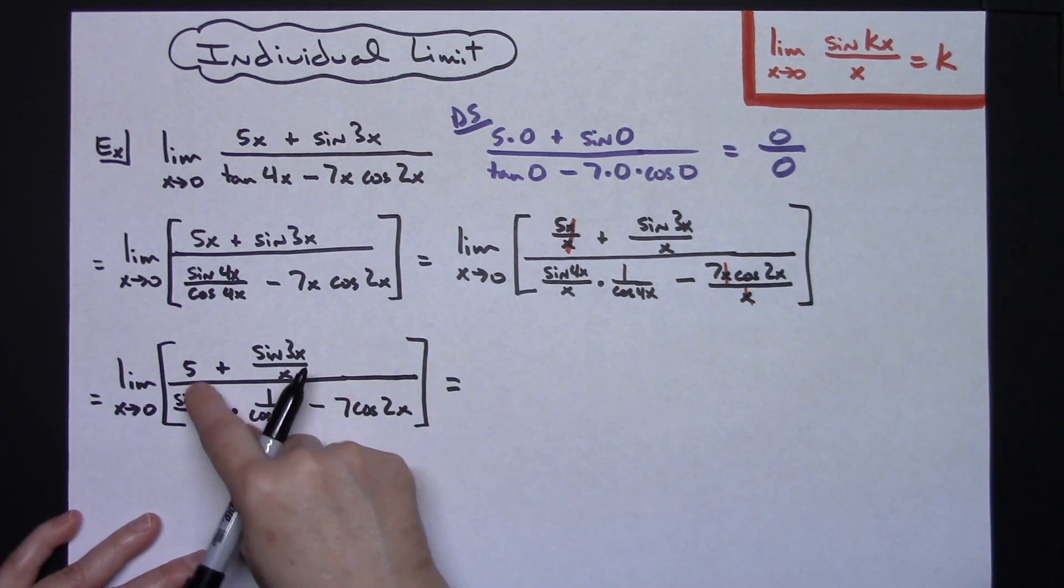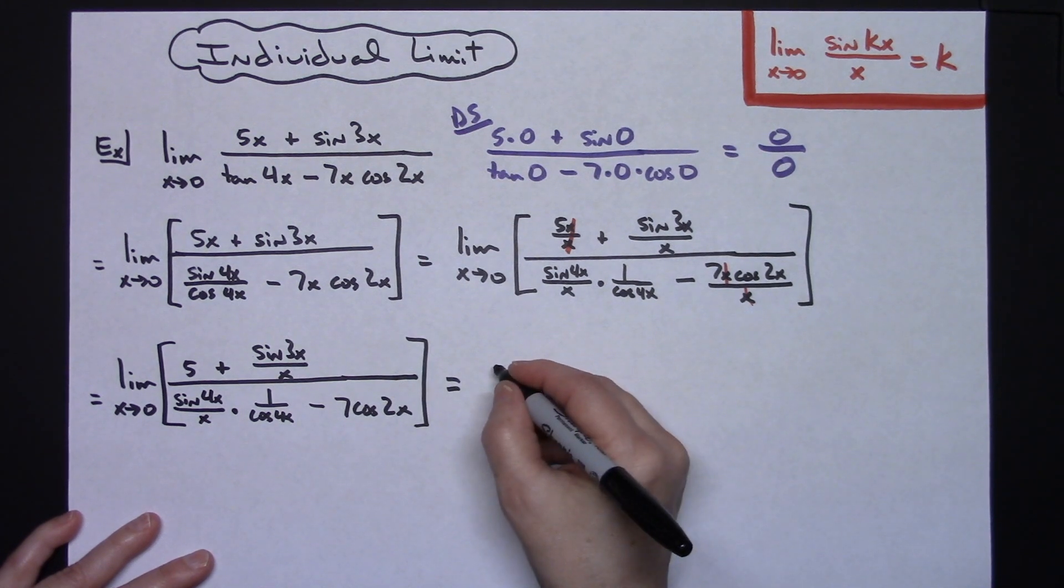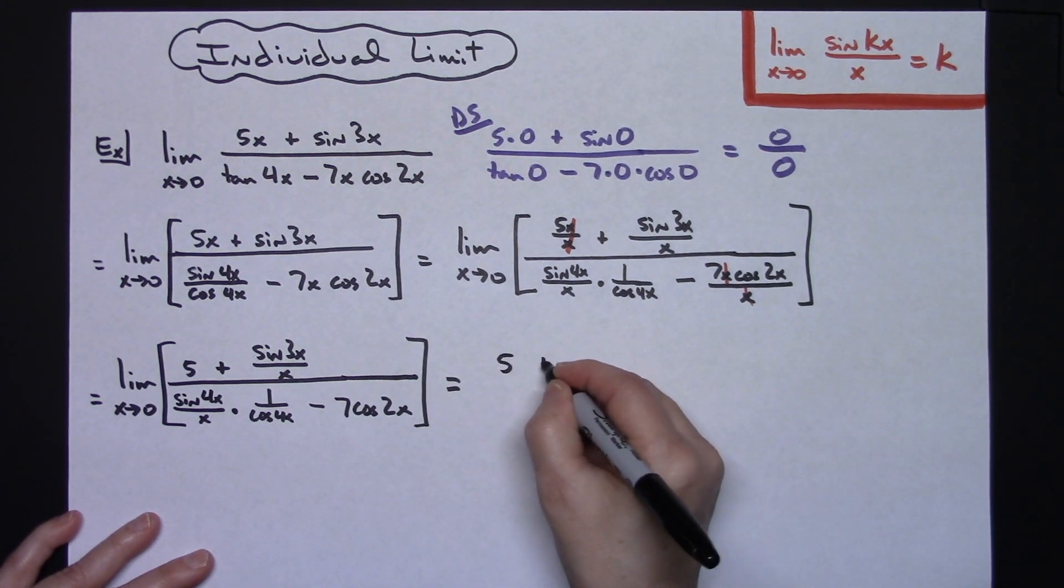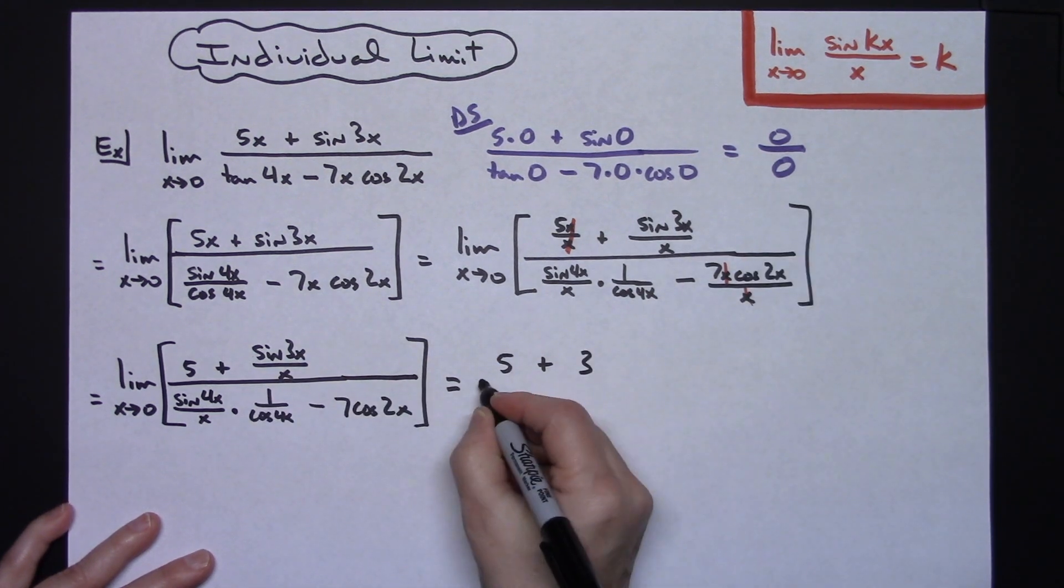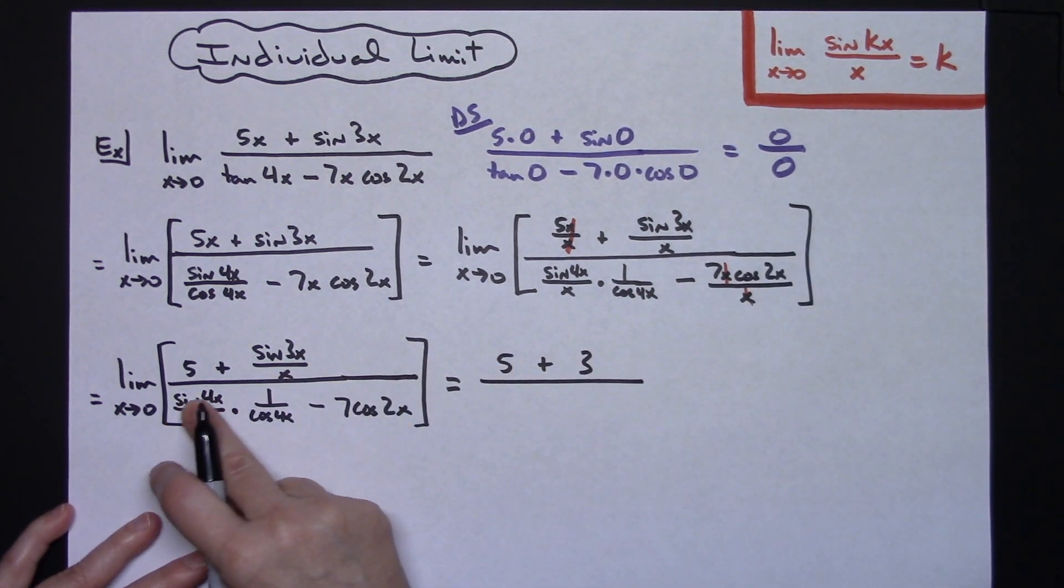So the limit as x approaches 0 of 5 is just going to give me the 5 there in the top. And this we know because of this goes to 3. This we know goes to 4.